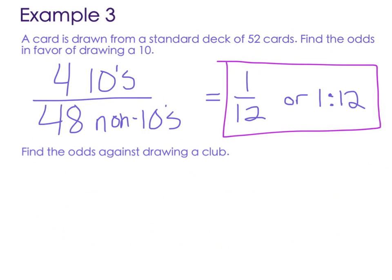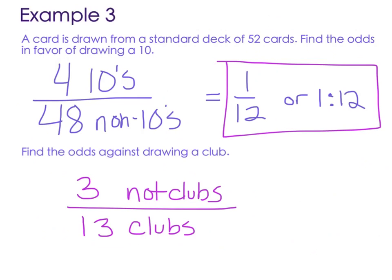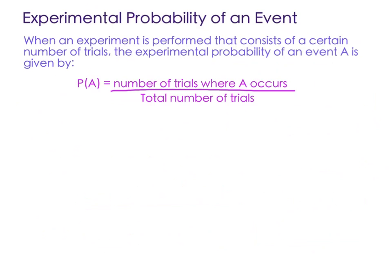Now find the odds against drawing a club. So we want to say how many cards are not clubs over cards that are clubs. And there are 4 suits in a deck of cards. So 52 divided by 4 is 13. There's 13 clubs. So if I subtracted 13 from 52, I'd get 39. 39 of the cards are not clubs. So 39 to 13, which reduces to 3 to 1, or 3 colon 1, 3 to 1. 3 to 1 odds against drawing a club. Means you're more likely to not draw a club, right?